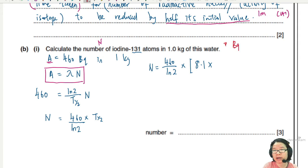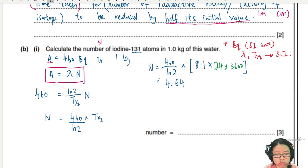N will equal 460 times half-life divided by ln 2. The half-life given is 8.1 days. Whenever dealing with becquerel, this is an SI unit, meaning your lambda and half-life must also be SI. So your 8.1 days have to be converted to seconds. One day has 24 hours, one hour has 3600 seconds. So 460 divided by ln 2 times 8.1 times 24 times 3600 gives me 4.64 times 10 to the power of 8. This is the amount of iodine-131 atoms inside 1 kg of water, and they're radioactive.